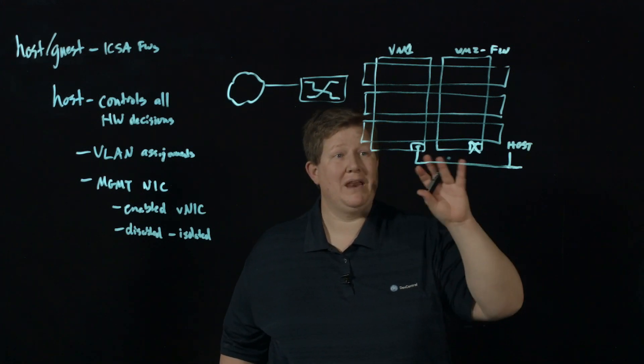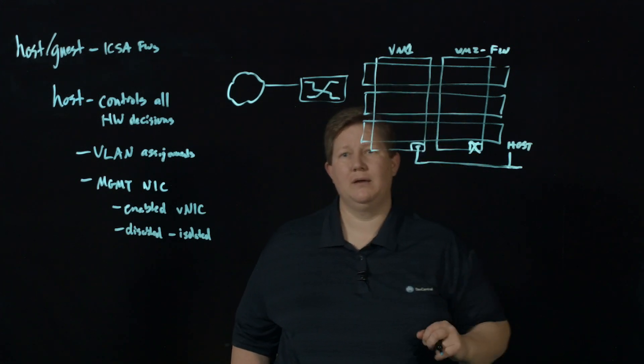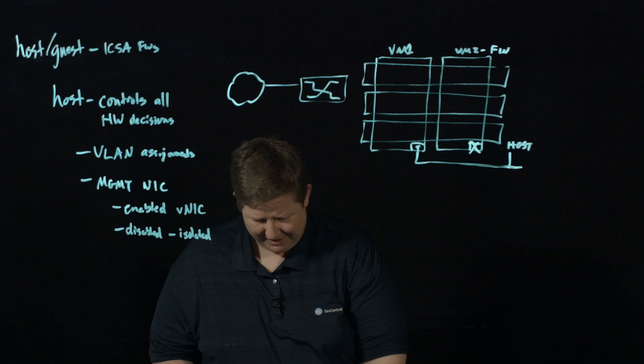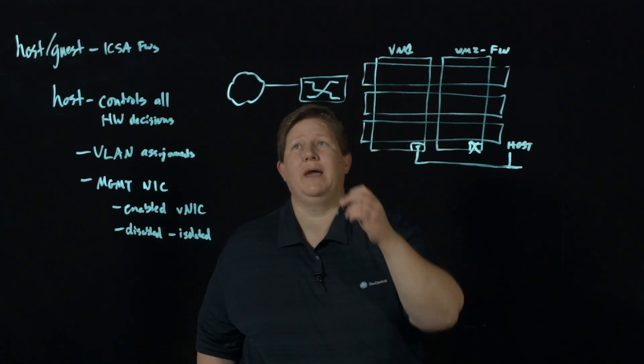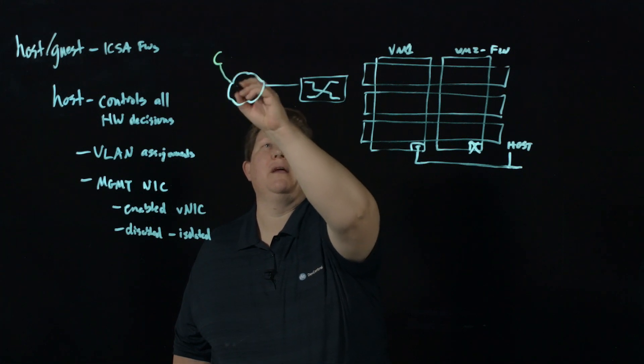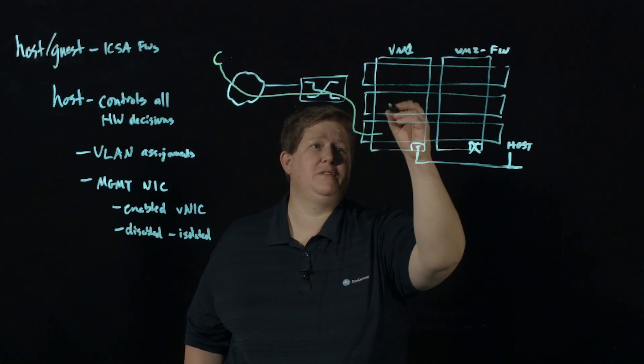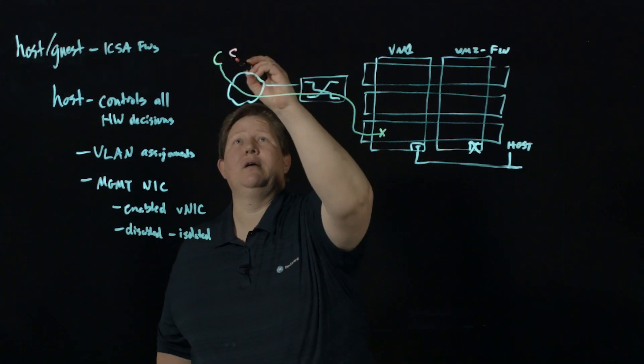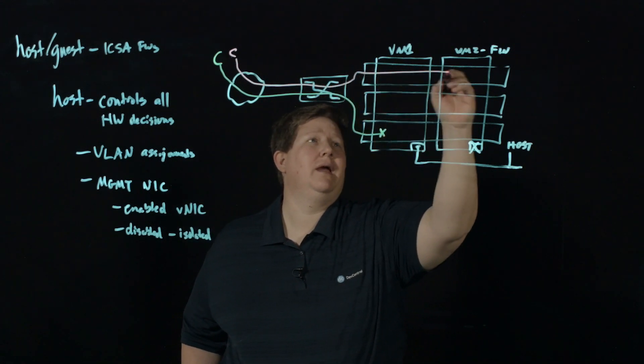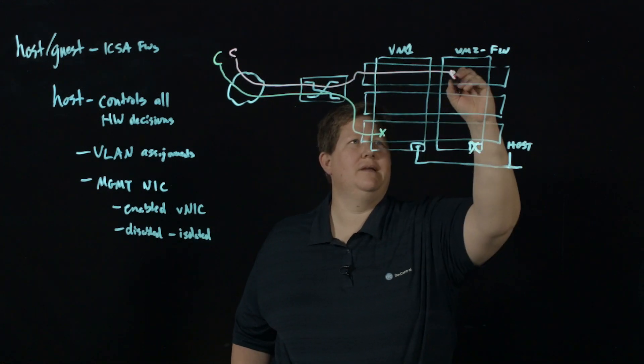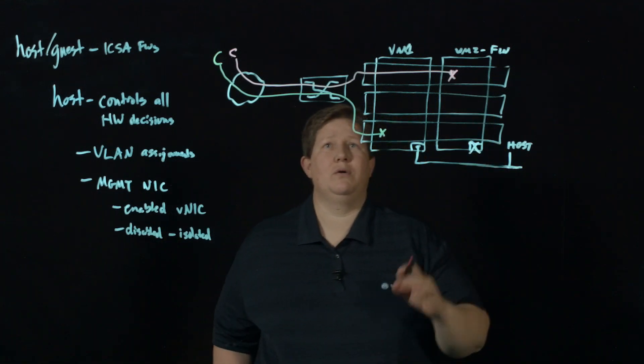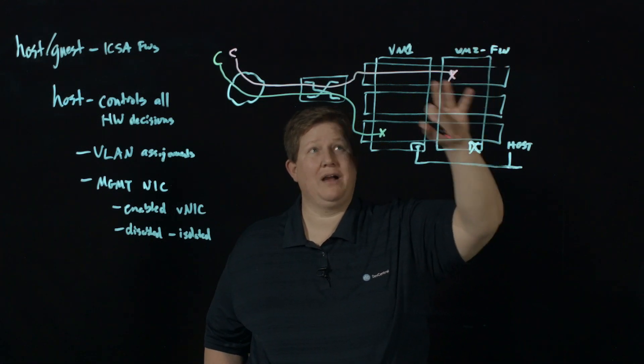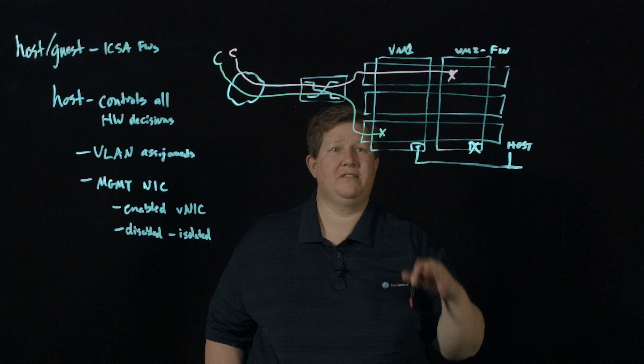It's also important to note that the management network is completely physically isolated from the data plane within a VCMP system. So if you start to look at how the traffic flows here, you've got this one VM, and say I have a client out here, and I come through the network, and I hit this particular VM. And then I have another client out here, and I come through the switch fabric, and I hit this VM. And those are isolated from each other.